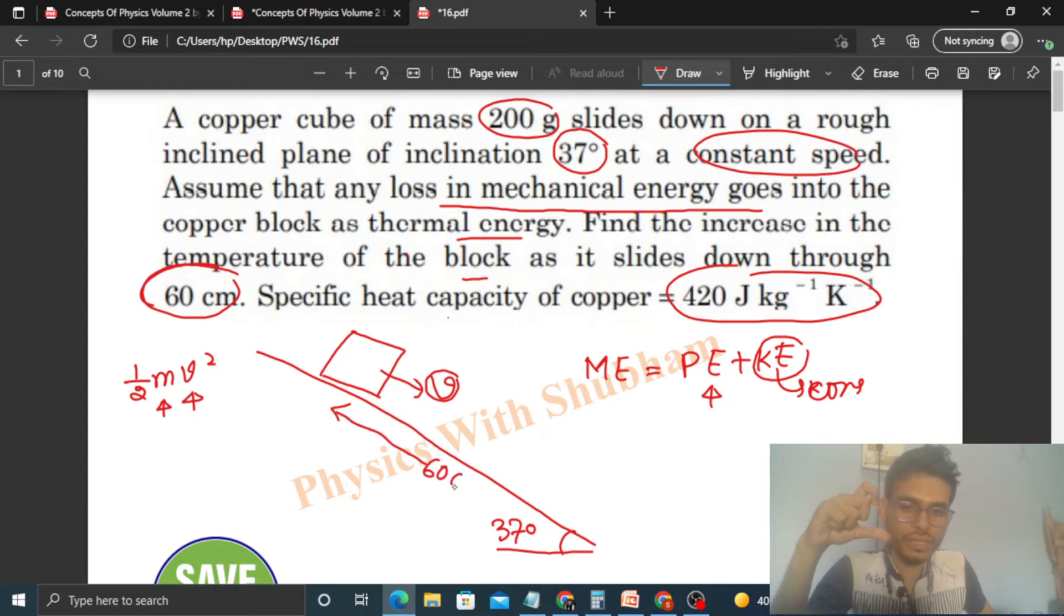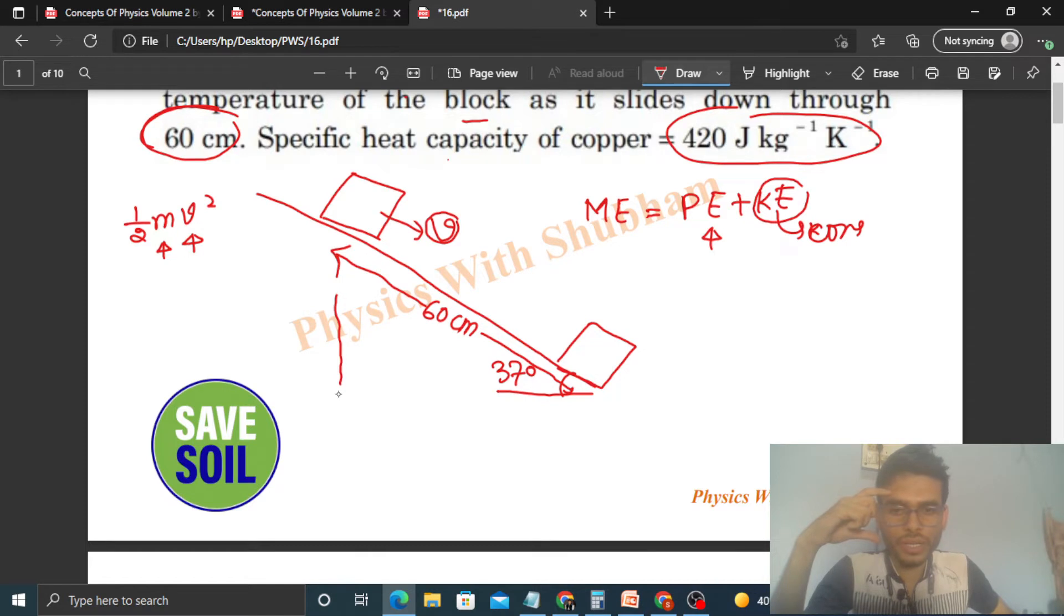When it travels this 60 centimeter distance, its vertical height will decrease. As you can see, this vertical height you can easily find out. It will be 60 times sin theta, so this will be 60 sin 37.